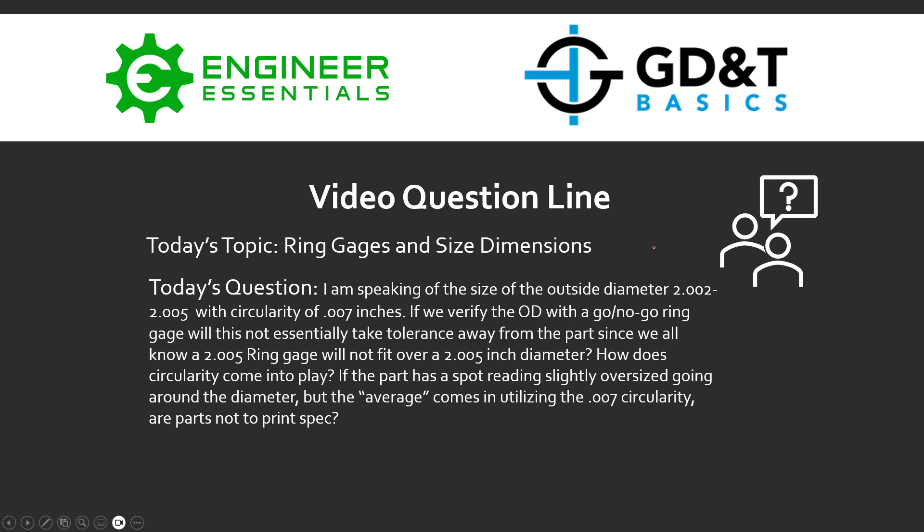Hey everybody, Jason here with GD&T Basics and the video question line. Today's topic is ring gauges and size dimensions. The question submitted is: speaking of the size of the outside diameter 2.002 to 2.005 with a circularity of seven thousandths of an inch — if we verify the OD with a go/no-go ring gauge, will this not essentially take tolerance away from the part, since a 2.005 ring gauge will not fit over a 2.005 inch diameter? How does circularity come into play?